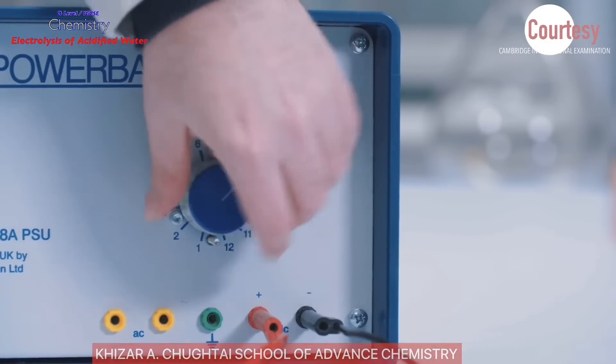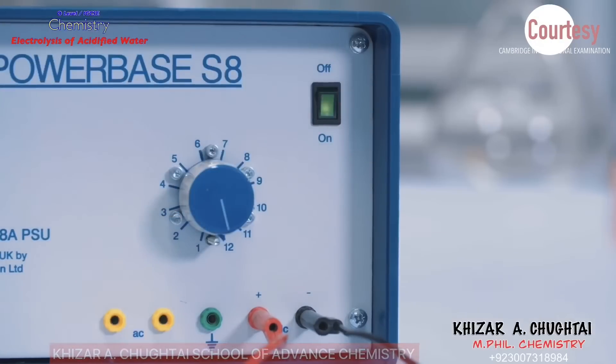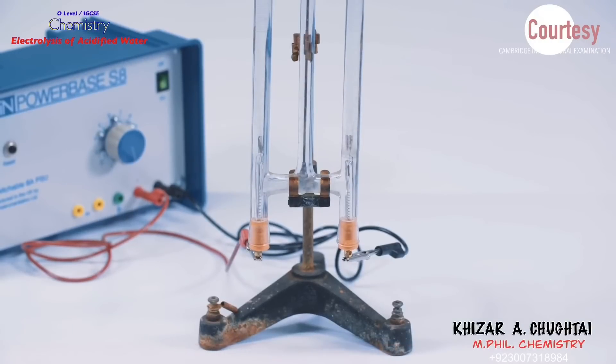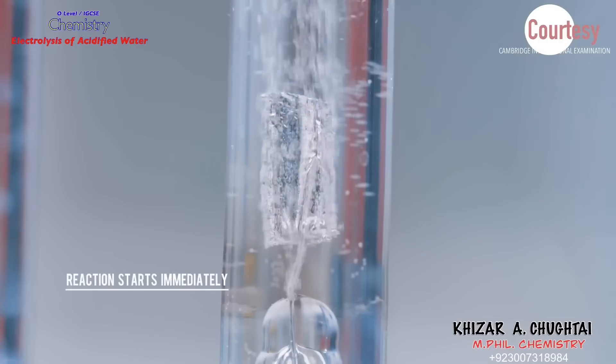DC power supply is adjusted to 12 volts, then switched on. Immediately, bubbles of gas are seen on both electrodes.